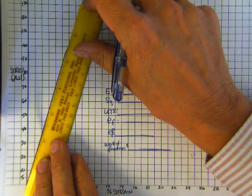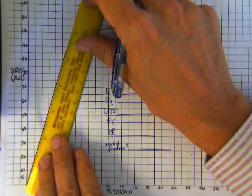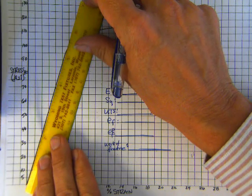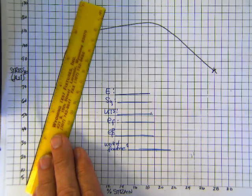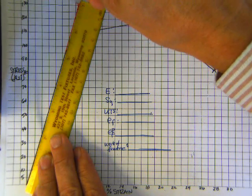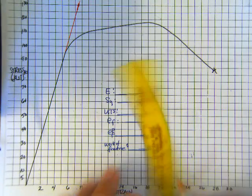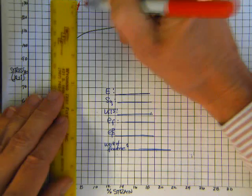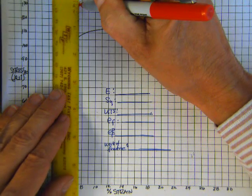Modulus, Young's modulus, will be the slope of the initial linear portion of the curve. So let's put our straight edge to this. You want to run it out as far as you can.